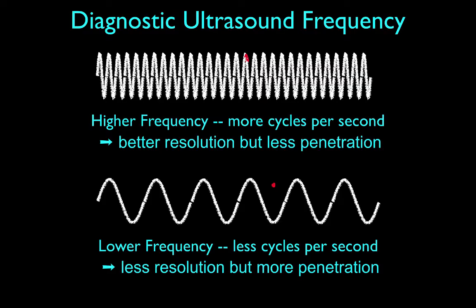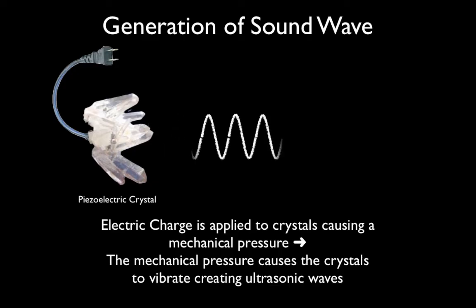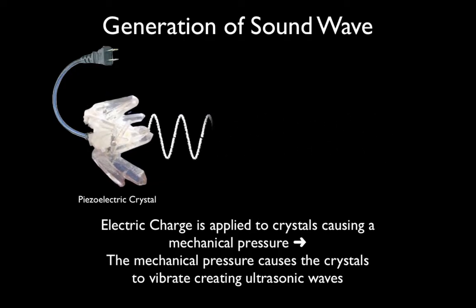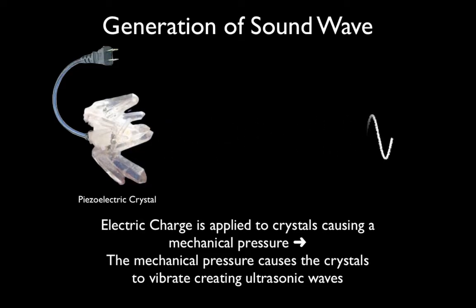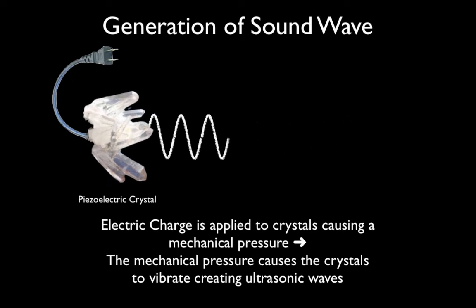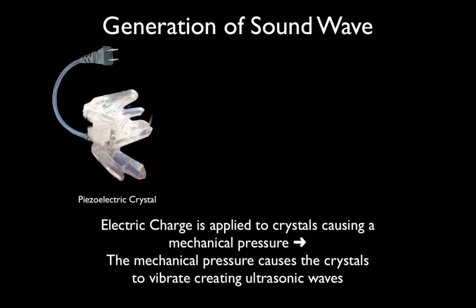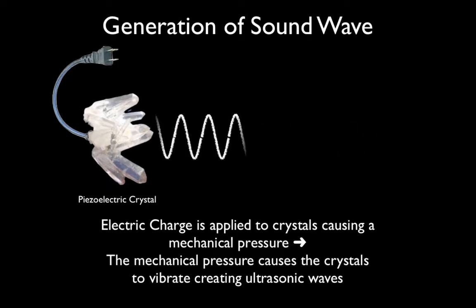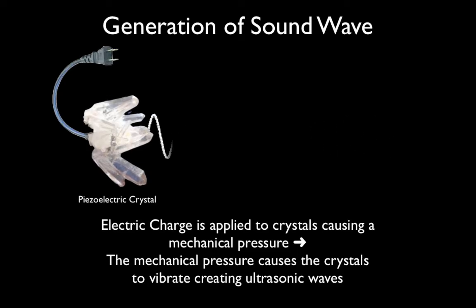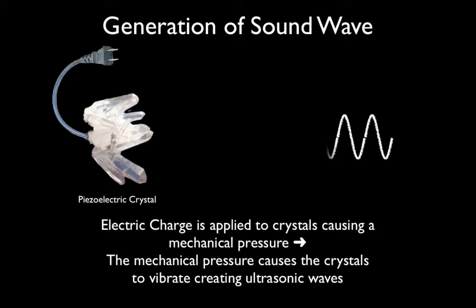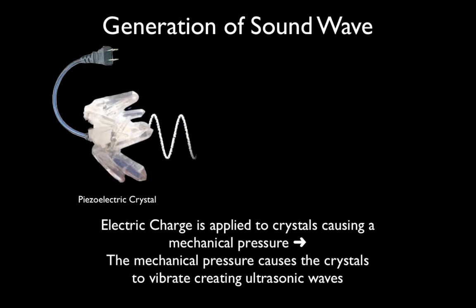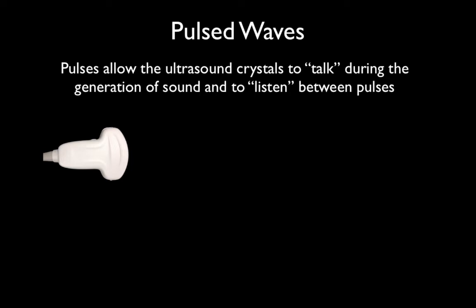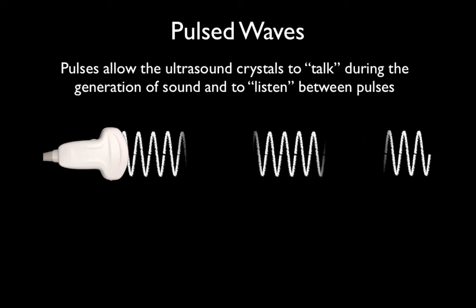To generate a sound wave, crystals inside the probe have an electrical charge applied to them, which creates mechanical pressure, causing them to vibrate and produce a sound wave. That sound wave is directed into the body. A small amount of gel is applied to create a good conduit between the probe and the skin, since sound travels well through liquid materials and through the fluid-containing organs in the body.